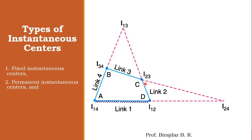The second type is the permanent instantaneous center. I₂₃ and I₃₄ are called permanent instantaneous centers. Even though their positions change according to the motion of link two or link four, the joints of link two and three, and three and four, are permanent — so we call them permanent instantaneous centers.